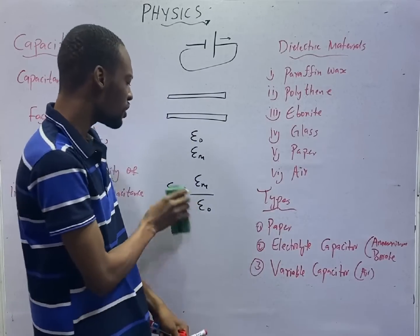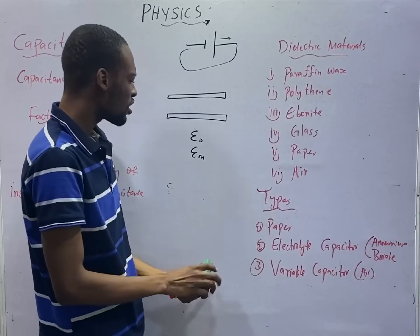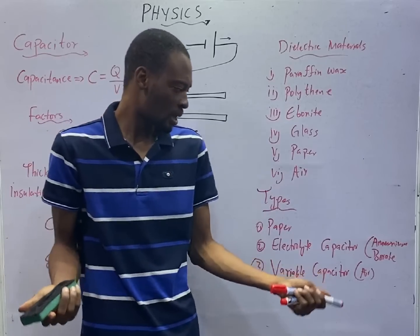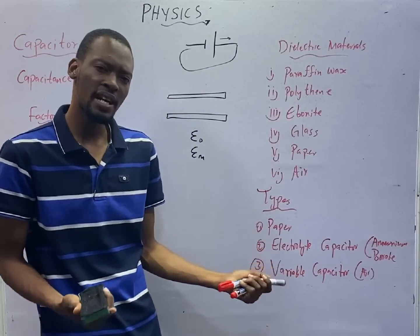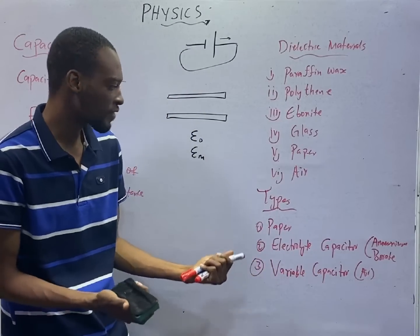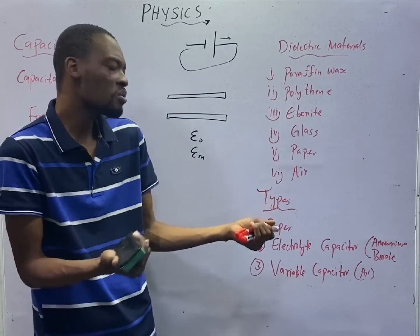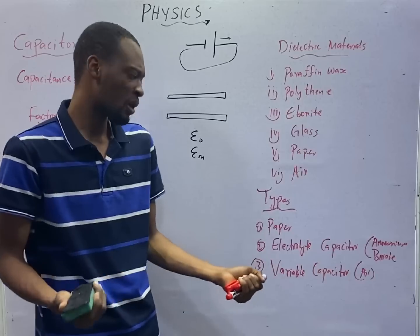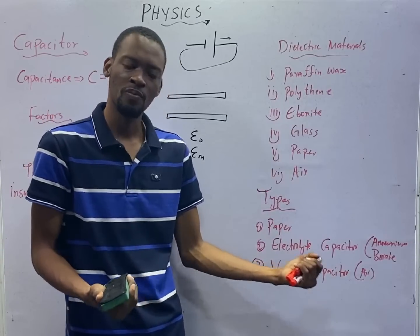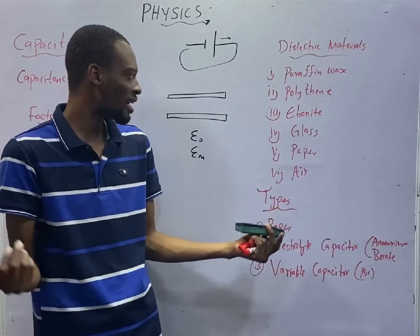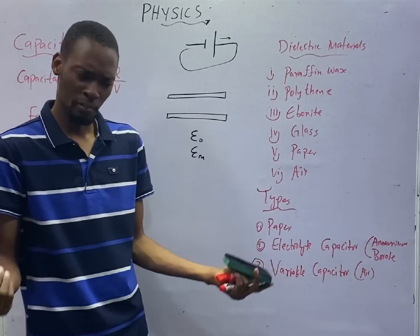And when you are dealing with capacitors, if you are using paper as your dielectric, you call that paper capacitor. Then electrolyte capacitor is a type of capacitor where ammonium borate and electrolyte is used as the dielectric material. Then we have a variable capacitor. In variable capacitor, air is sandwiched between them as the dielectric materials.